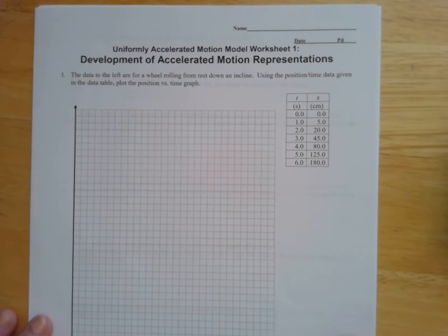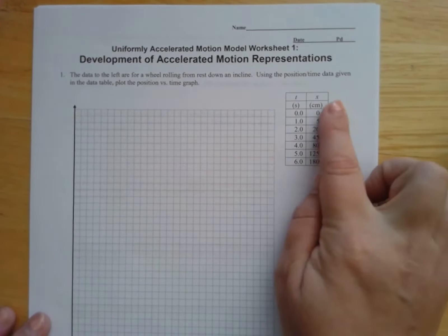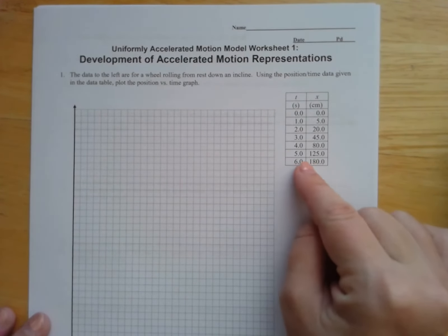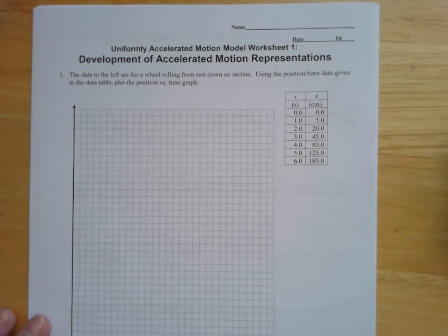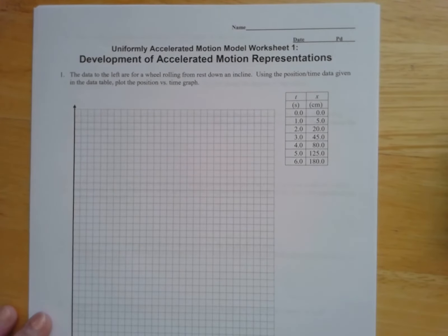And what this worksheet does is it lets us look at some data. This is kind of idealized data, so it's data that's very clean so that we can see all the relationships that we want to see. But this is walking us through the idea of understanding that acceleration is when you have a change in velocity.